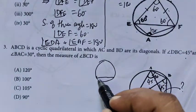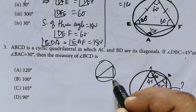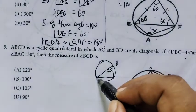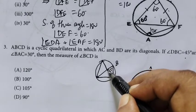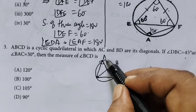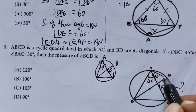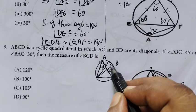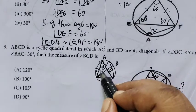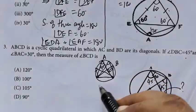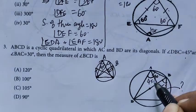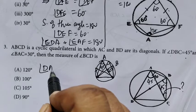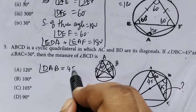This chord subtends an angle of 45 degrees at B. The same chord subtends the same angle of 45 degrees at A. So this is 45 and this is the question mark. Angle DAB equals 45 plus 30.